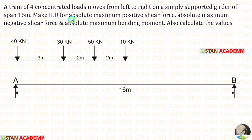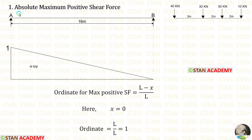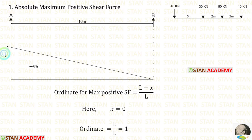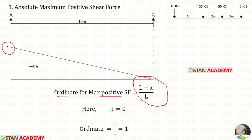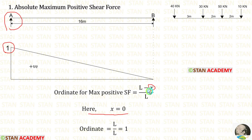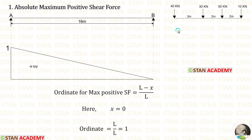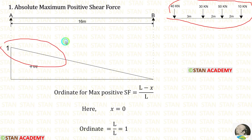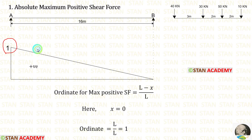First let us calculate the absolute maximum positive shear force. For calculating it, we have to keep the ordinate as 1 on the left side of the beam. The ordinate for maximum positive shear force is equal to (L minus x) by L. The maximum ordinate is kept at point A. When we apply x equal to 0, L by L gives us 1. For calculating the maximum absolute positive shear force, we have to keep all of these loads on the left side because on the left side the ordinate is maximum.